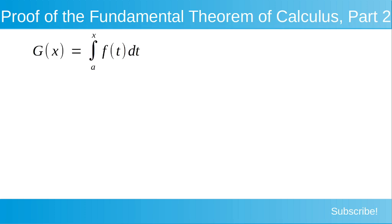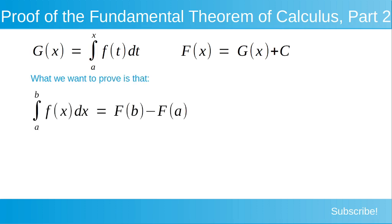So we have our function G, which is equal to the integral from a to x of f dt. We also have the function F, where F is any antiderivative of our function f, equal to G plus c. Our function G is our net area function, also being an antiderivative. What we want to prove is that the integral from a to b of f dx is equal to F(b) minus F(a).